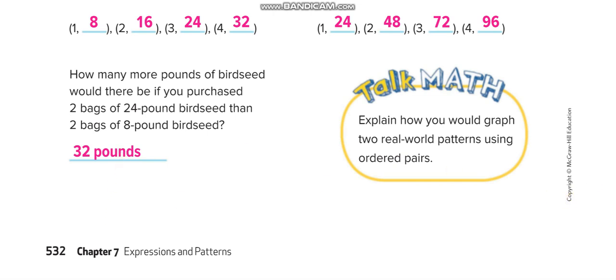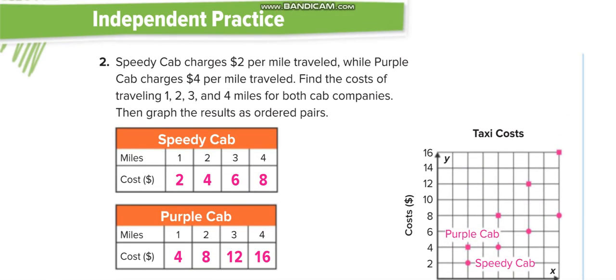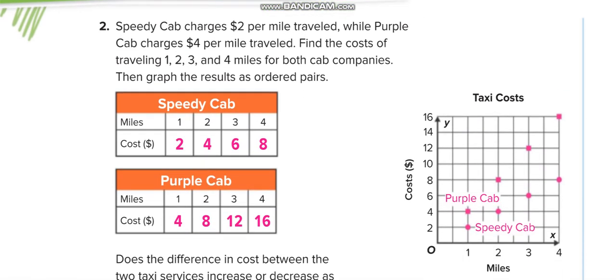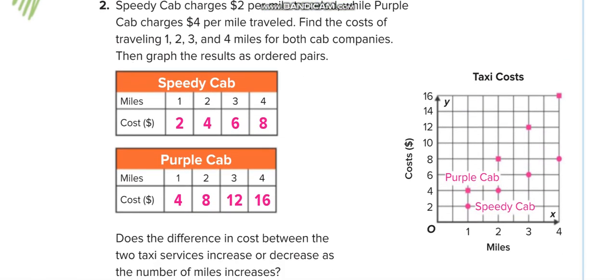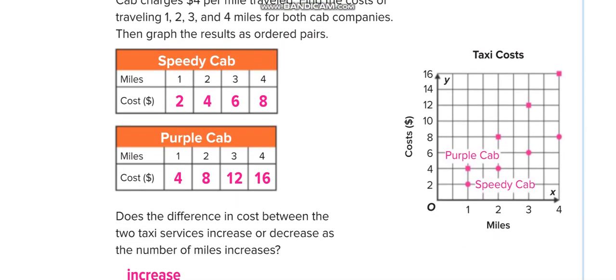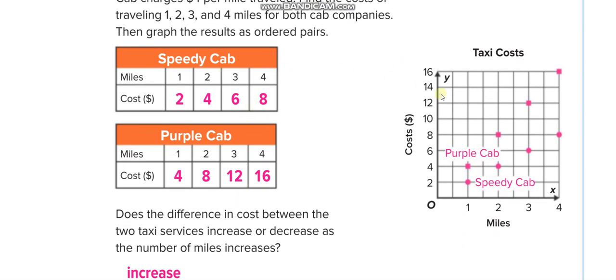Similarly, here you will solve these two questions in independent practice. First you will make the table, then represent the data on the graph, and then join the dots to make the lines. This line is for Speedy Cap and this line is for Purple Cap.